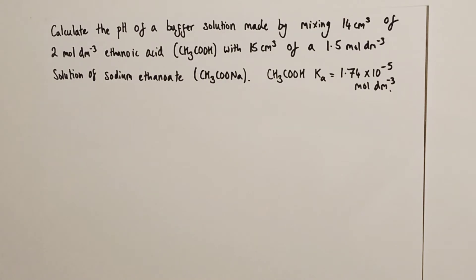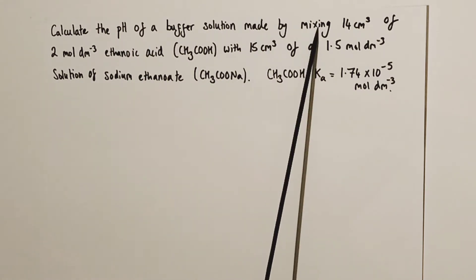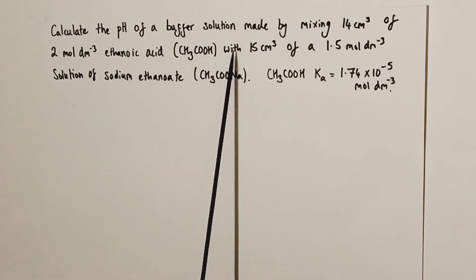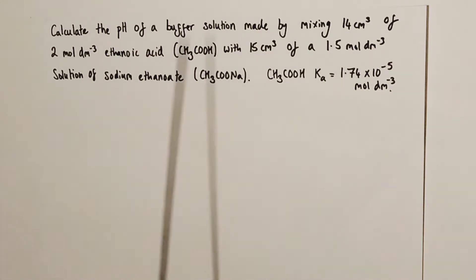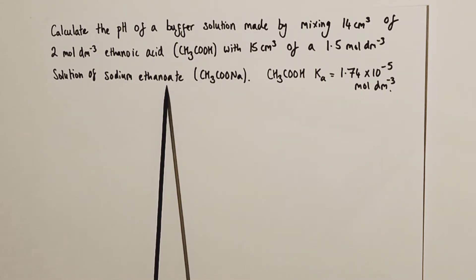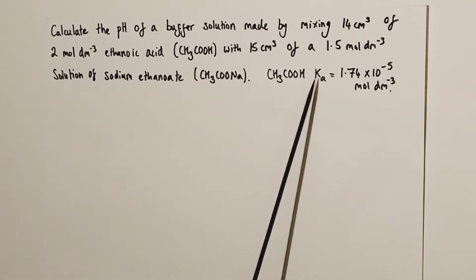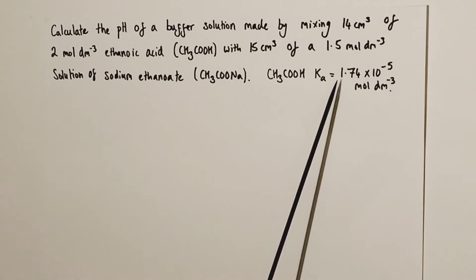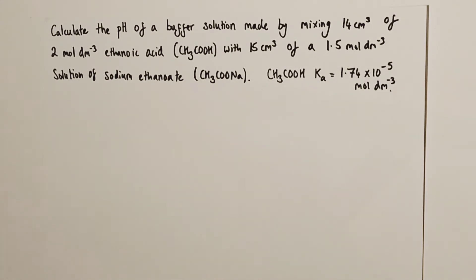Let's work through a worked example of an exam-style question step by step. We're asked to calculate the pH of a buffer solution made by mixing 14 cm³ of 2 mol/L ethanoic acid with 15 cm³ of 1.5 mol/L sodium ethanoate — the salt contributing the conjugate base A- to the solution. The Ka value for ethanoic acid is given as 1.74 × 10⁻⁵ mol/L.